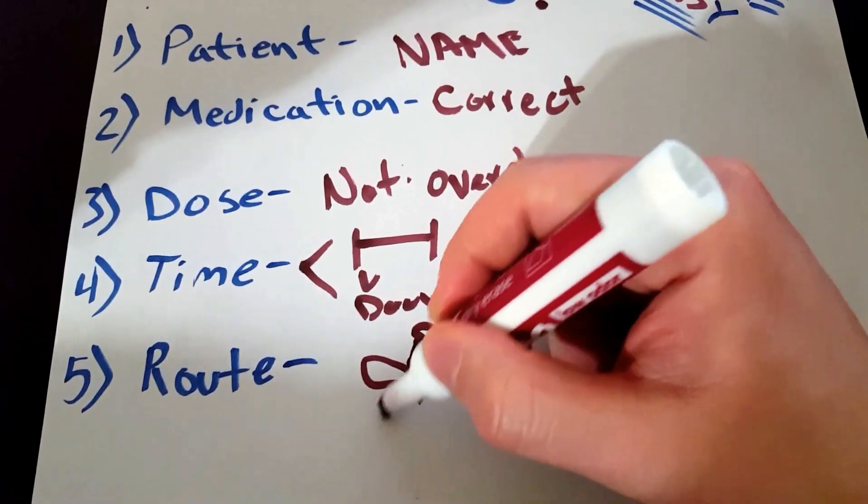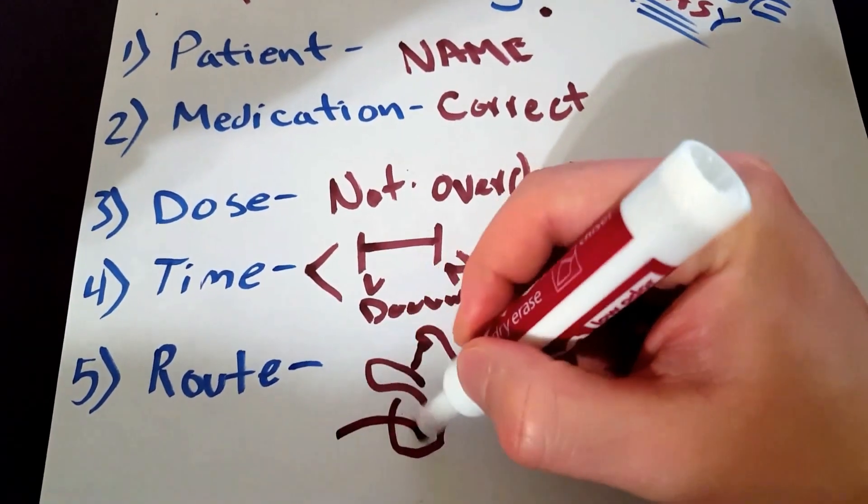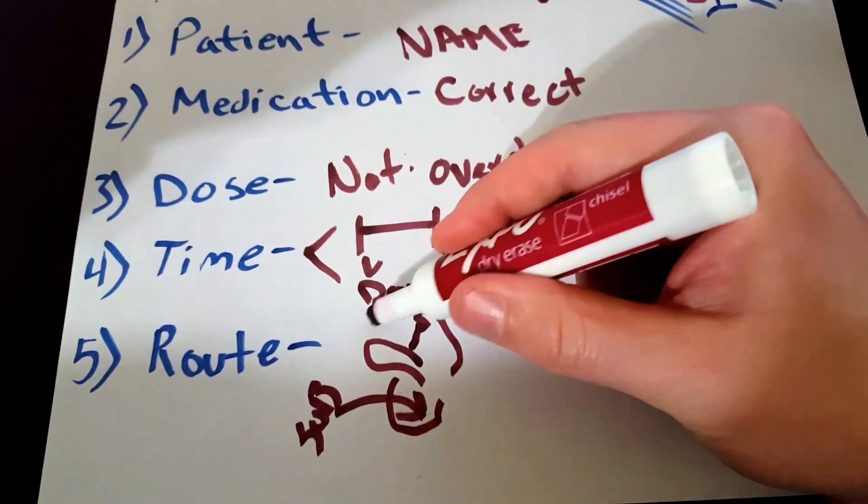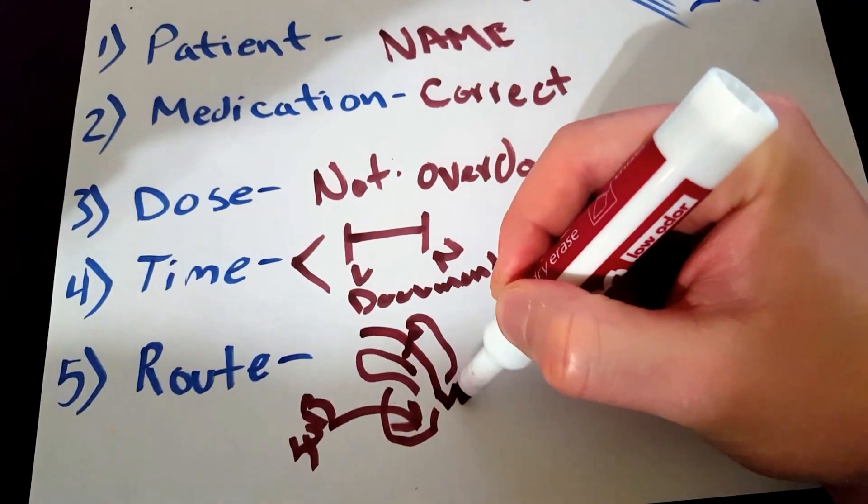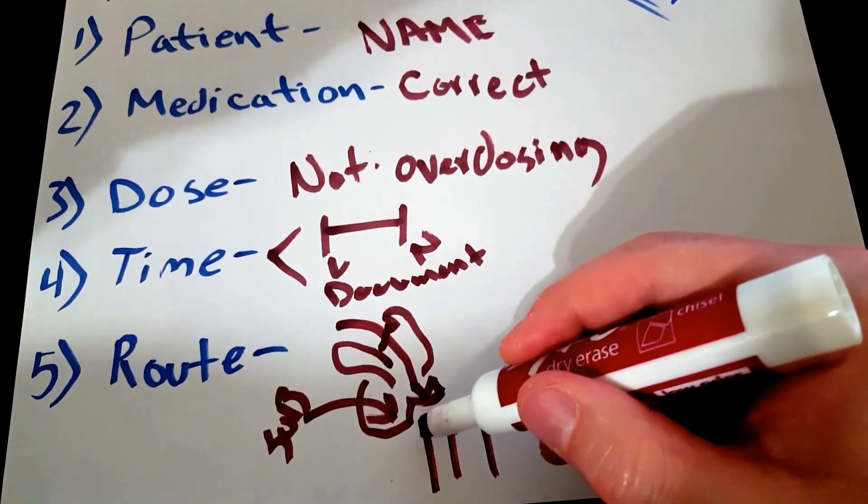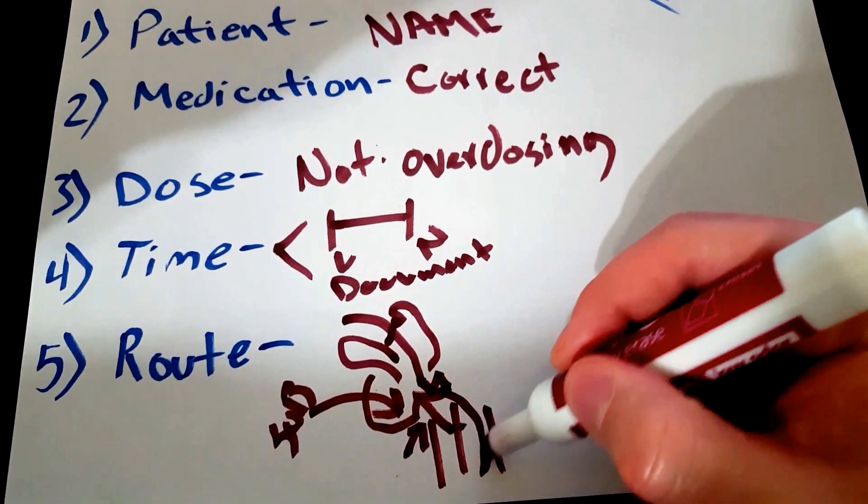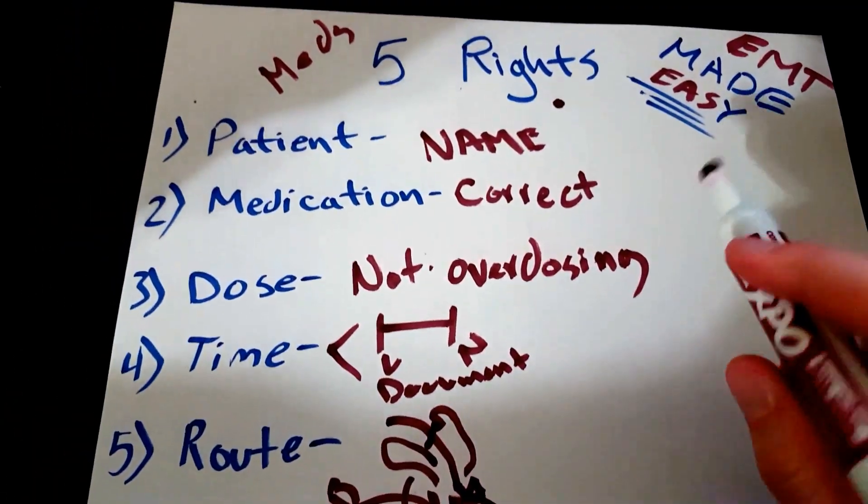So routes: is it sublingual, or is it orally, going down the actual mouth, esophagus, trachea, epiglottis right there? Or is it orally? And these are your five rights, guys.